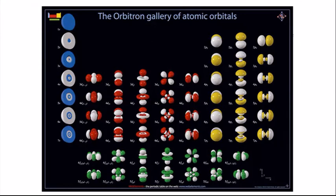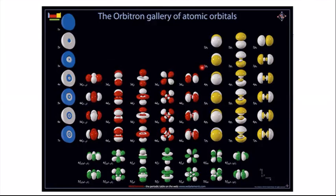Looking at all the orbitals on the periodic table: the alkali metals at the left correspond to s orbitals, and as you go down the rows, the row number indicates the principal quantum number N. The transition metals in the middle are where d orbitals appear, starting at N=3 and then N=4, as shown by the color coding between those energy levels.